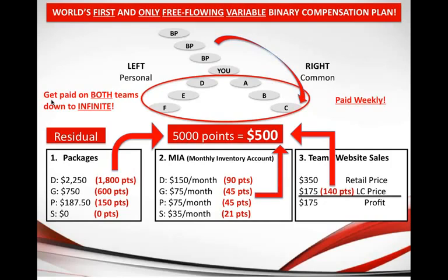To recap the three cash machines: every week the computer looks at both teams, checking all packages sold, all Monthly Inventory Account sales, and all team website sales — all of that goes into your five thousand points to make you five hundred dollars. And people in our company right now are generating at least one hundred thousand points a week, which equals ten thousand dollars a week. Imagine making ten thousand dollars a week in passive lifetime residual income on sales of products that people buy because they want to, not because they have to.